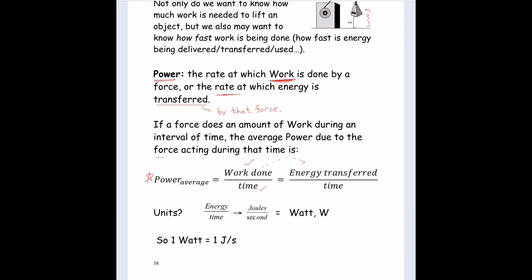Work is energy being transferred. For example, if you drop an object, gravity does work. The work done by gravity decreases the potential energy but increases the kinetic energy — think of that as energy being transferred. Potential energy is transferred from the ball-Earth system to the kinetic energy of the ball. The average power is the rate at which that's occurring.